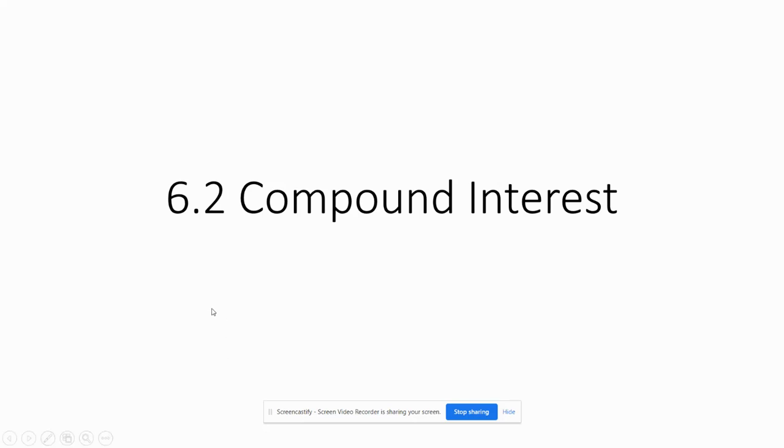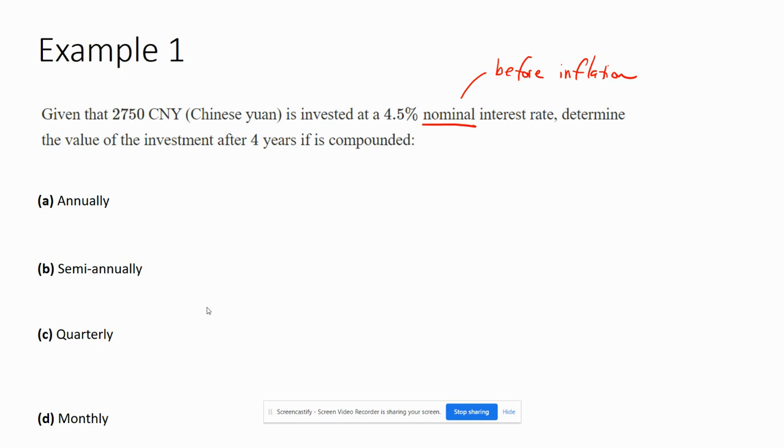All right, in this video, I'm going to go through compound interest. So a few examples. We'll start out with this situation where we're going to compound 2750 Chinese yuan at 4.5% interest. And we're going to do it annually, semi-annually, quarterly,